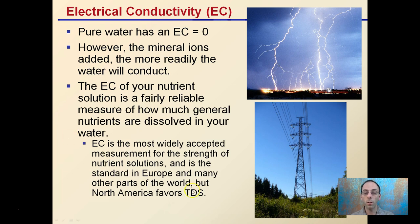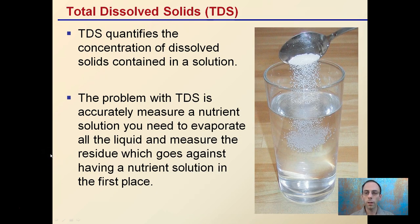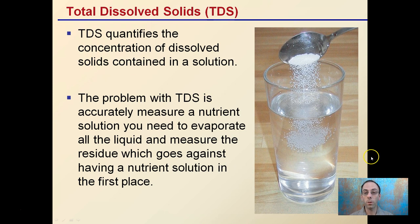North America tends to prefer TDS — total dissolved solids — but there are a couple more issues with that one compared to EC. TDS quantifies the concentration of dissolved solids in a given aqueous solution. The problem with TDS is that accurately measuring the nutrient solution requires you to evaporate all the liquid and measure the residue, which goes against having a nutrient solution in the first place. There are also conversion factors involved, and it can get messy, so even though it's widely used by many growers, it may not necessarily be the best.